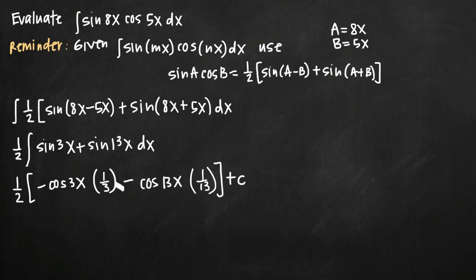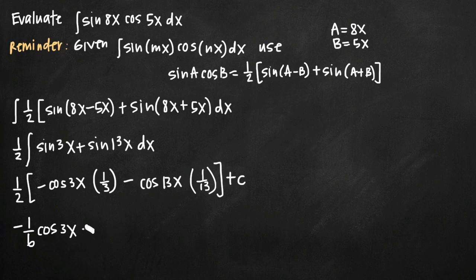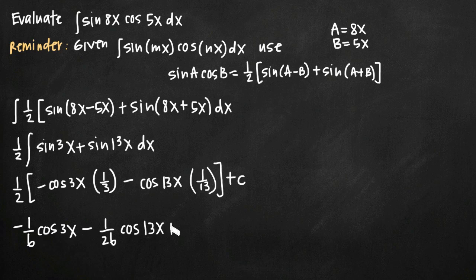Now we just need to simplify. So we'll pull the 1 third out in front, multiplying it by the 1 half. And the negative sign here will give us a negative 1 sixth cosine of 3x. Same thing here, we'll pull the 1 thirteenth out in front, multiplying it by the negative sign and the 1 half. It gives us a negative 1 over 26 cosine of 13x plus c. And that's it. That's our final answer.